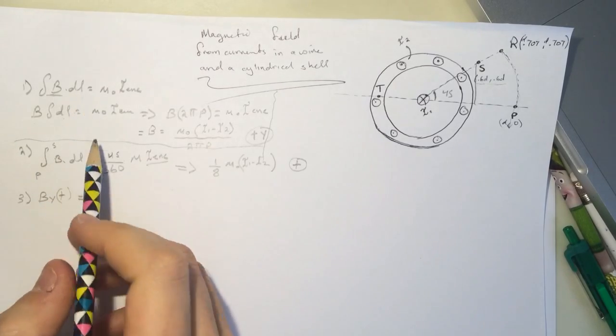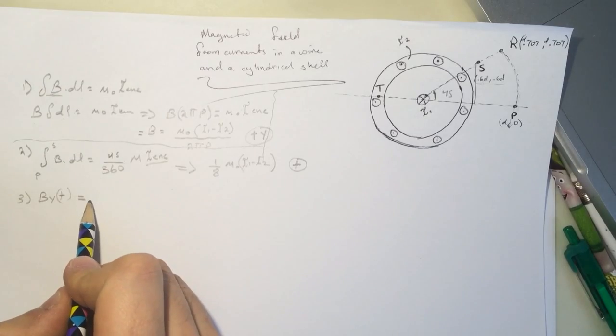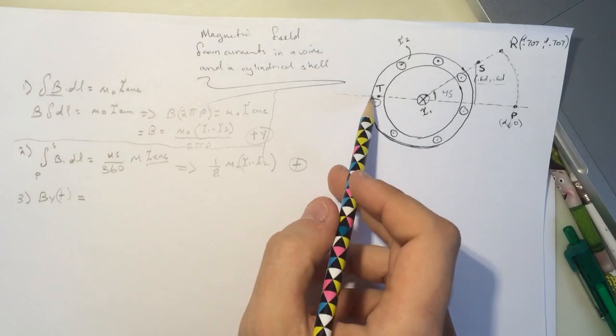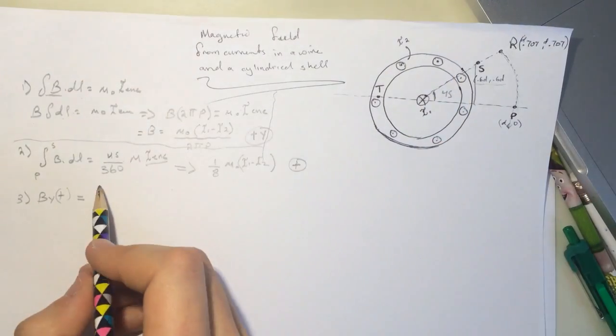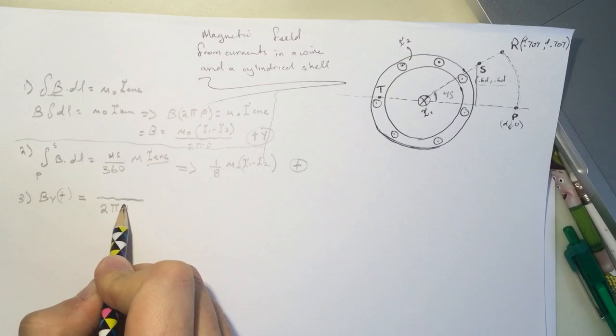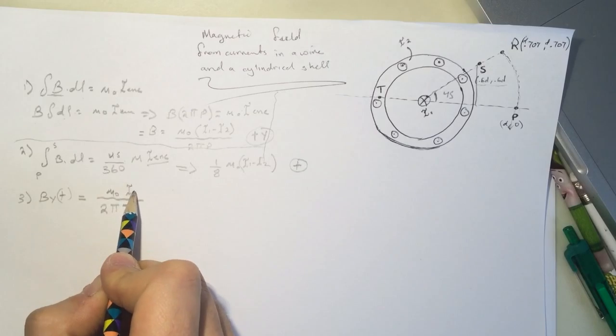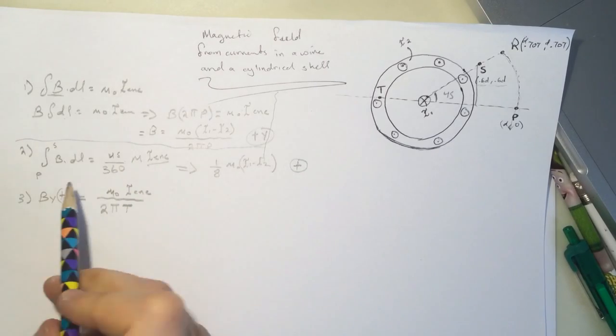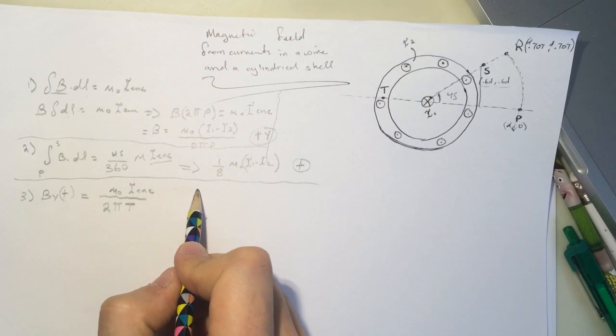So going through this again, you'll get B dot DL. The DL here will be 2 pi T. This will be the Ampere surface. So it's going to be 2 pi times T over mu naught I enclosed. Now, the trick is the I enclosed. How would we get I enclosed?